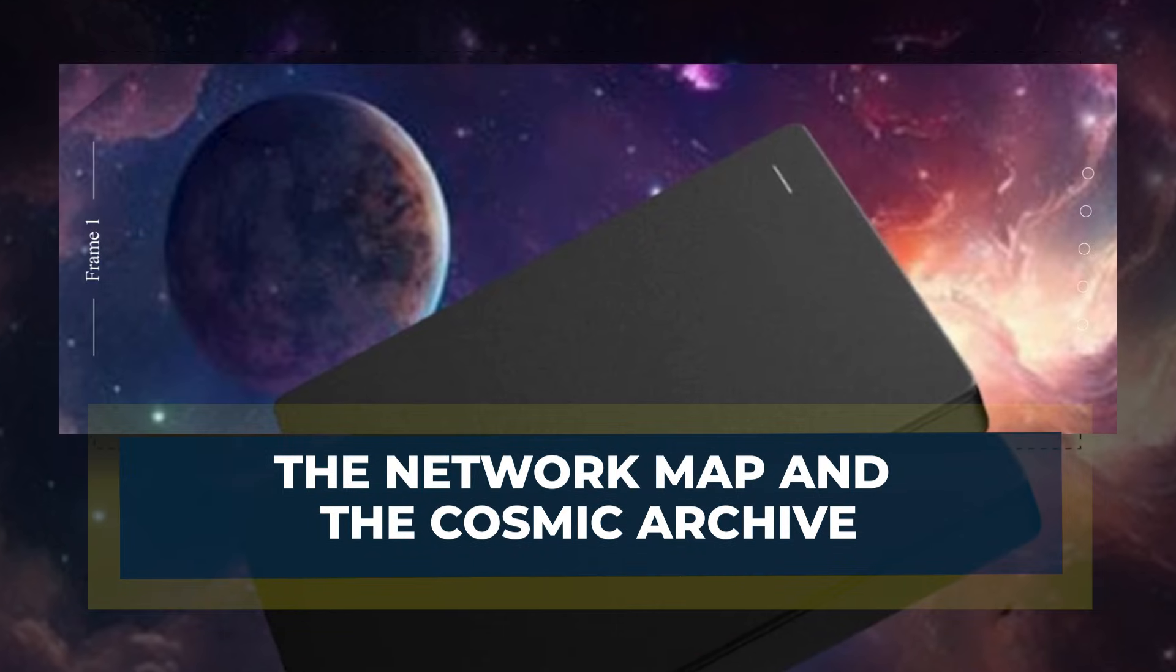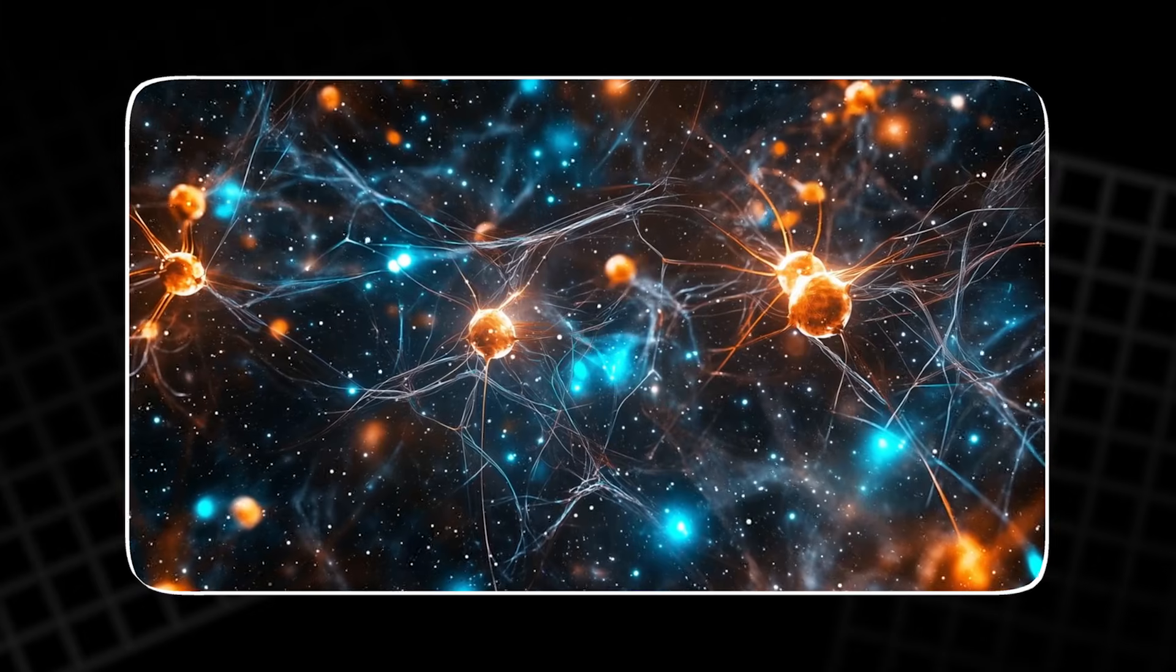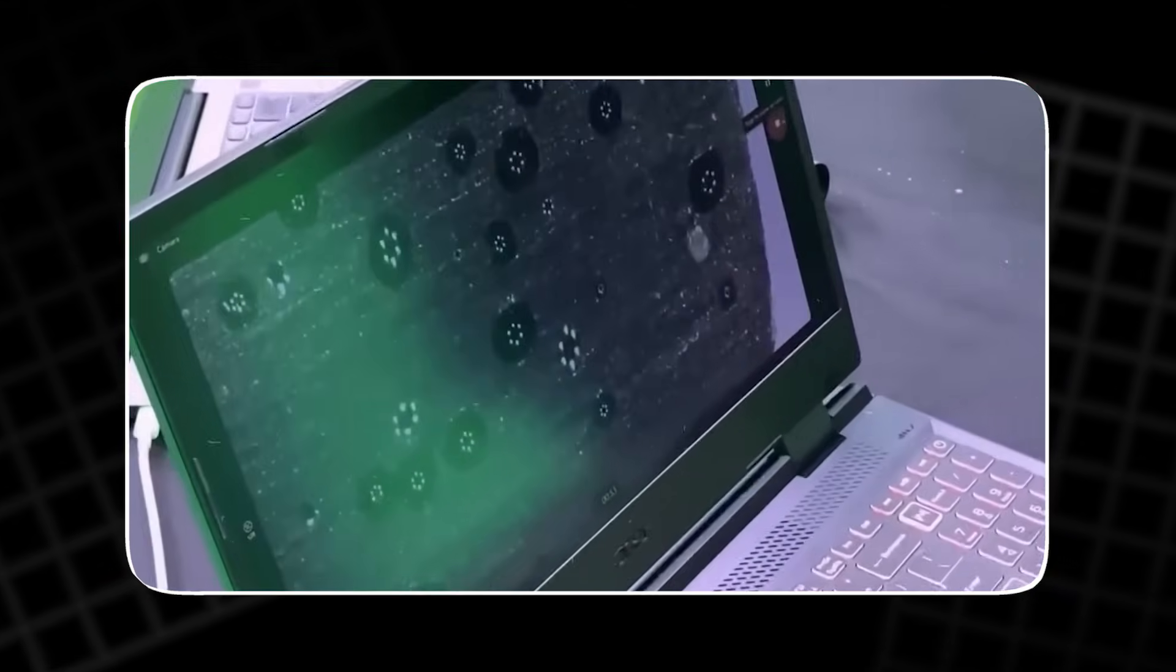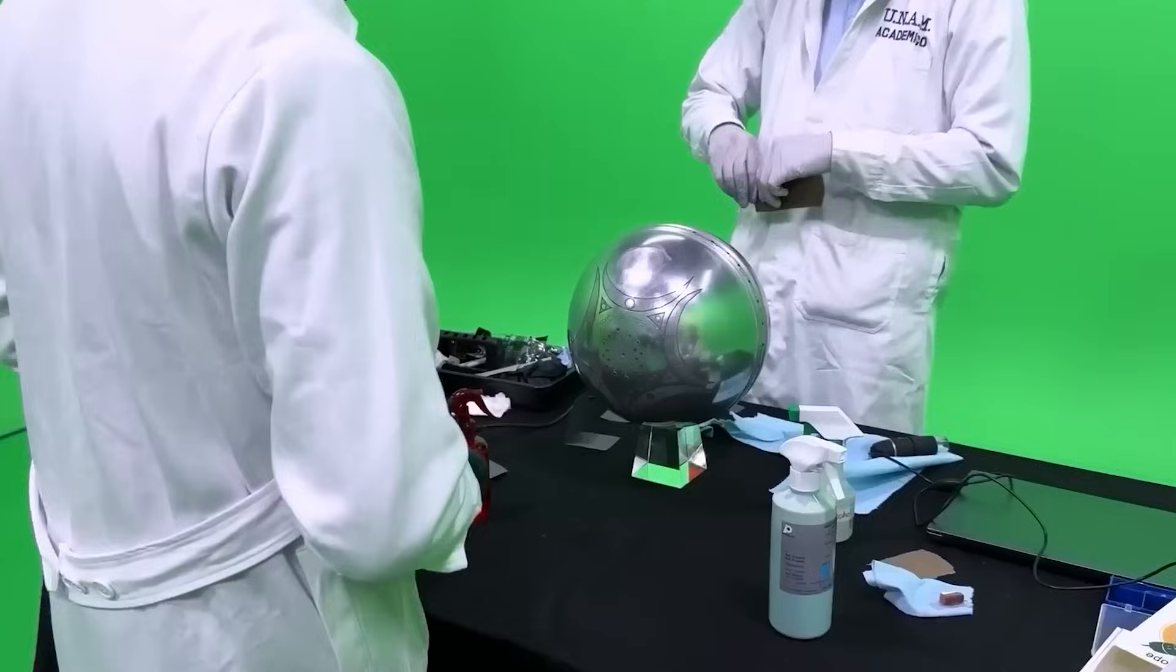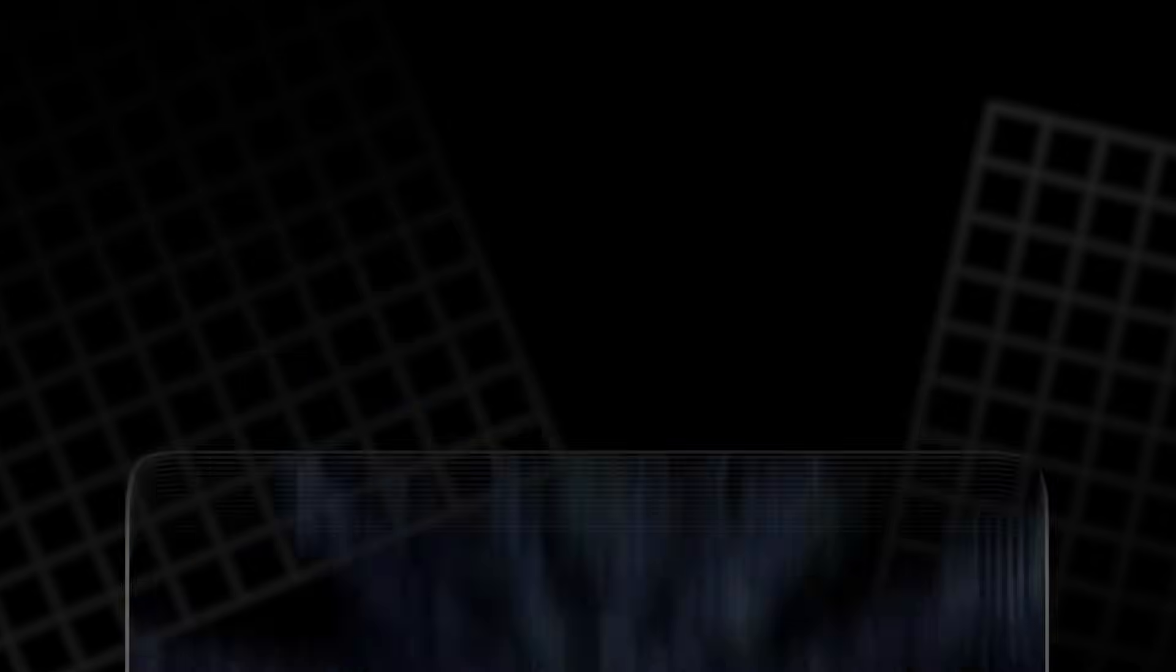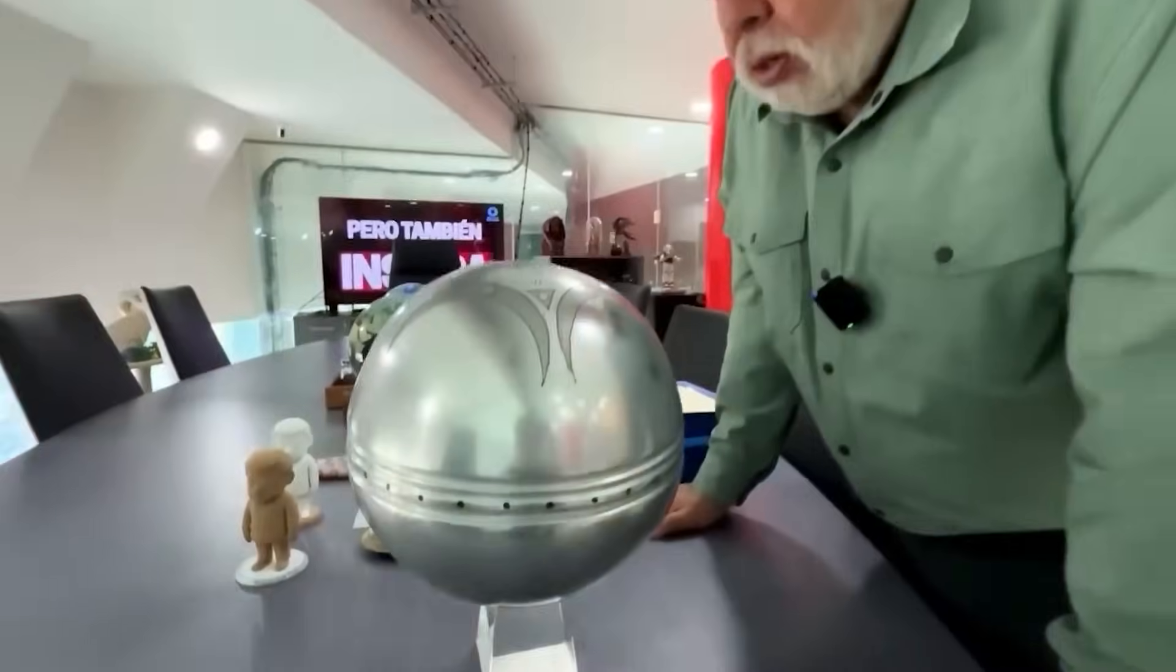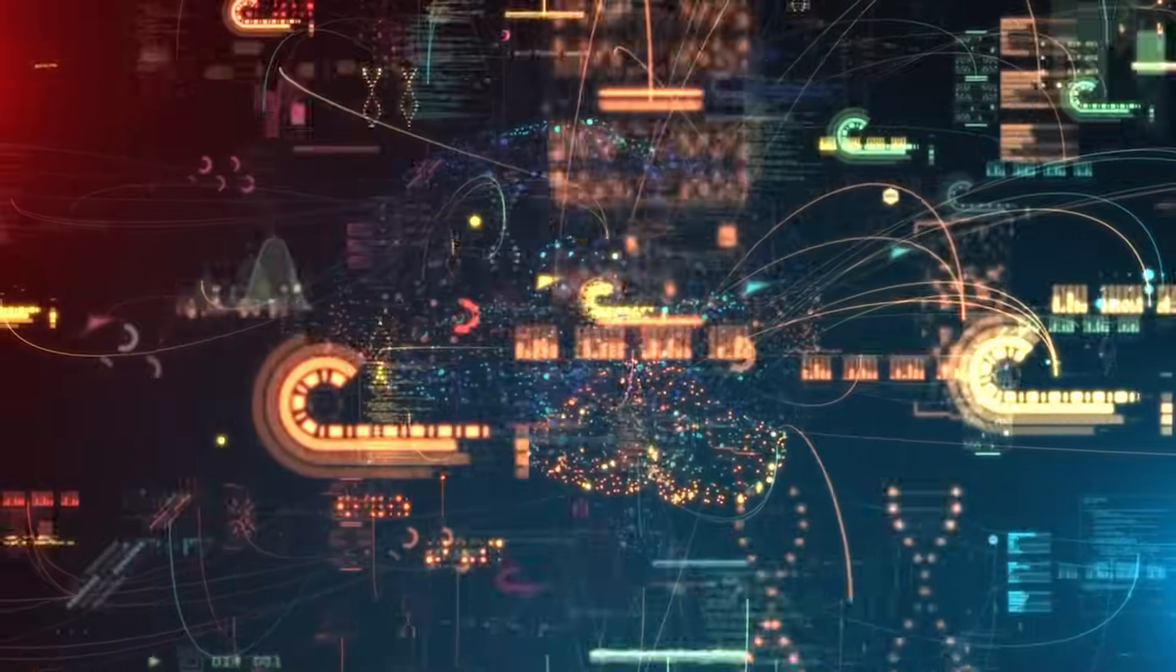Network mapping required the most powerful visualization tools available. The conduit web is so dense and three-dimensional that no human can understand it without computational help. Neural networks processed the data. Volume rendering revealed the shape. Pattern analysis exposed structure. What emerged shocked everyone. The network had repeating forms, layered hierarchies, and nodes arranged with mathematical discipline. It looked less like a machine and more like a language carved into space. Even before translating anything, researchers understood the truth. The network was artificial and intelligent.